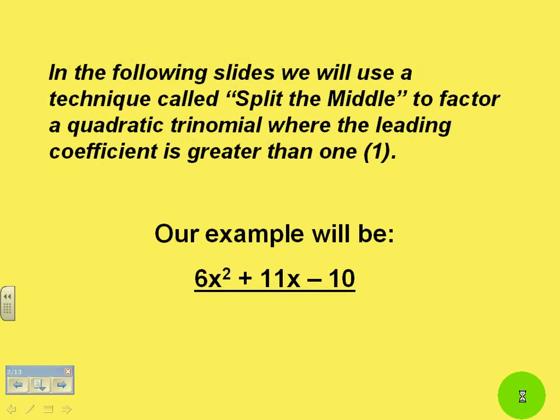In the following slides we'll use a technique called Split the Middle to factor a quadratic trinomial where the leading coefficient is greater than 1. Our example will be 6x squared plus 11x minus 10.